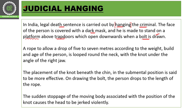When the bolt is drawn, a rope is allowed to drop five to seven meters. This is very important — the rope drops from five to seven meters. The distance of five to seven meters is determined according to the weight, build, and age of the person, because we have to make the arrangement accordingly. The rope is looped around the neck.